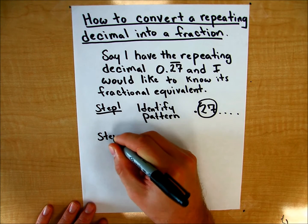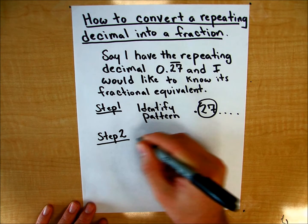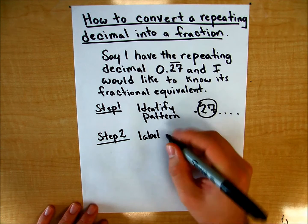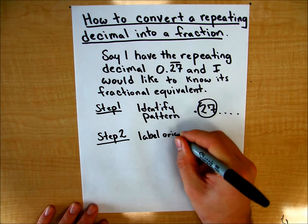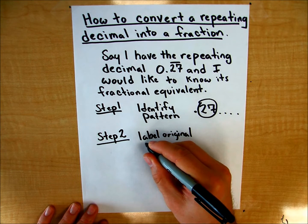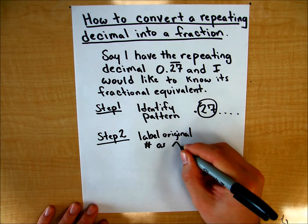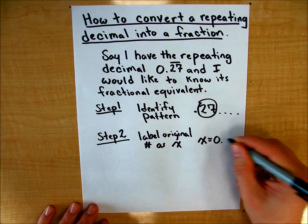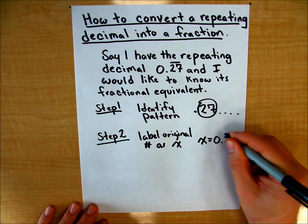Step two: label the original. Label or just set it equal to a variable, however you want to say this. So I'm going to set it as x. So I'm going to say x is equal to 0.27 repeating.